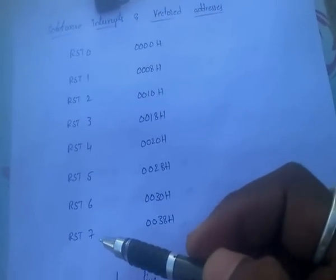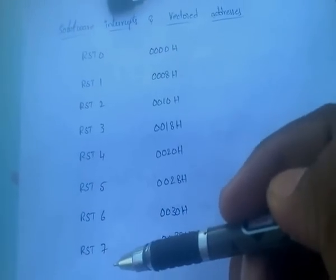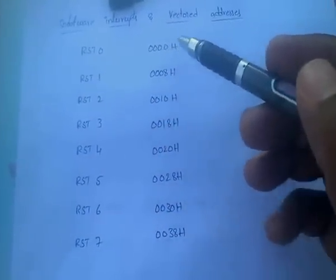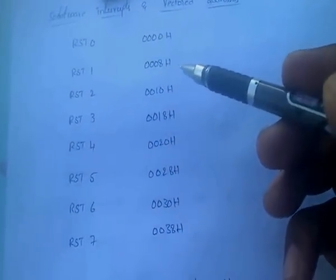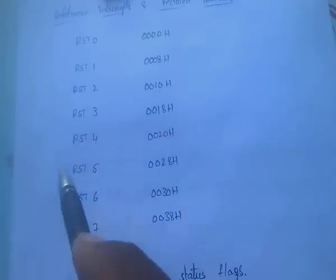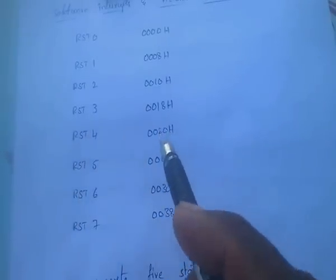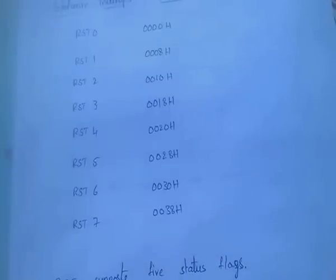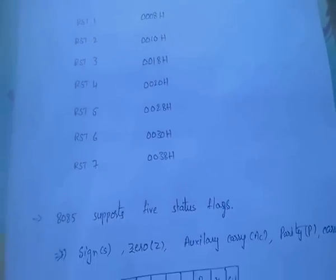Coming to software interrupts: there are 8 interrupts, RST0 through RST7. Their vector locations are: RST0 → 0000H, RST1 → 0008H, RST2 → 0010H, RST3 → 0018H, RST4 → 0020H, RST5 → 0028H, RST6 → 0030H, and RST7 → 0038H. Here H denotes hexadecimal.